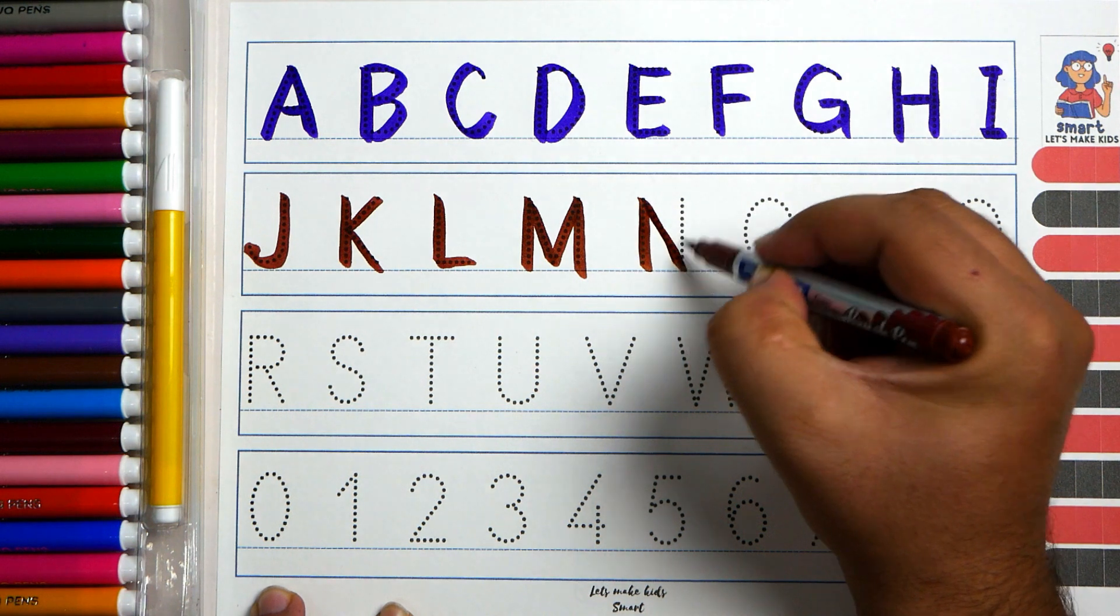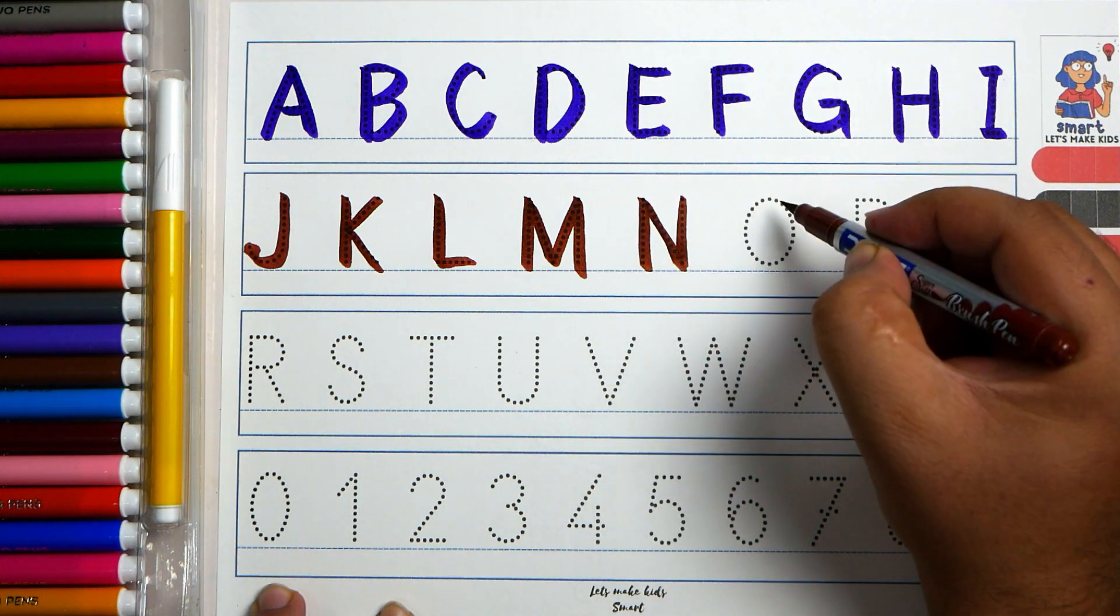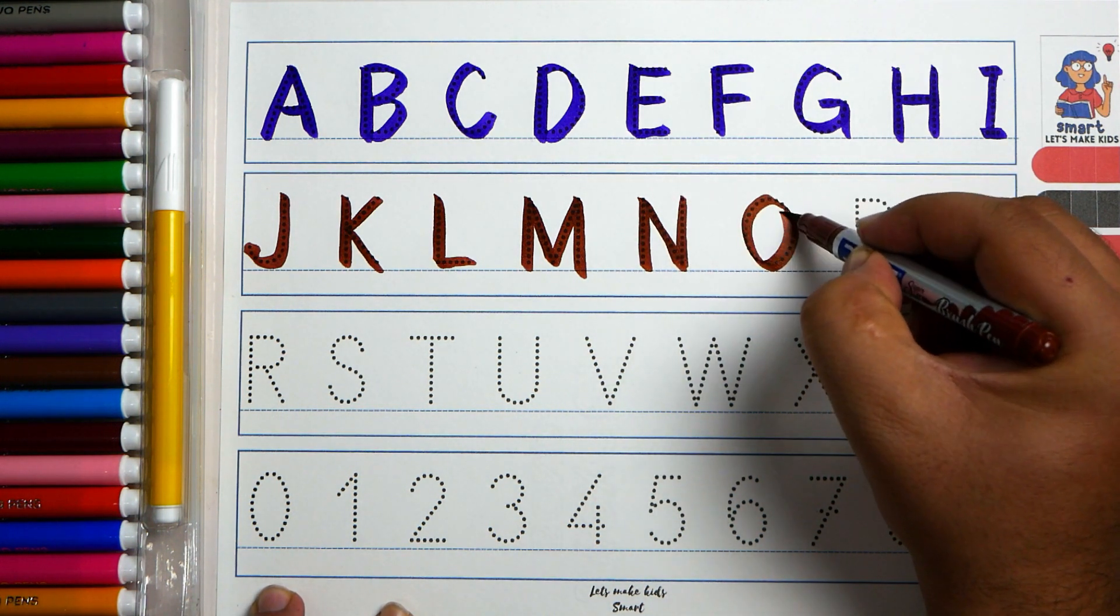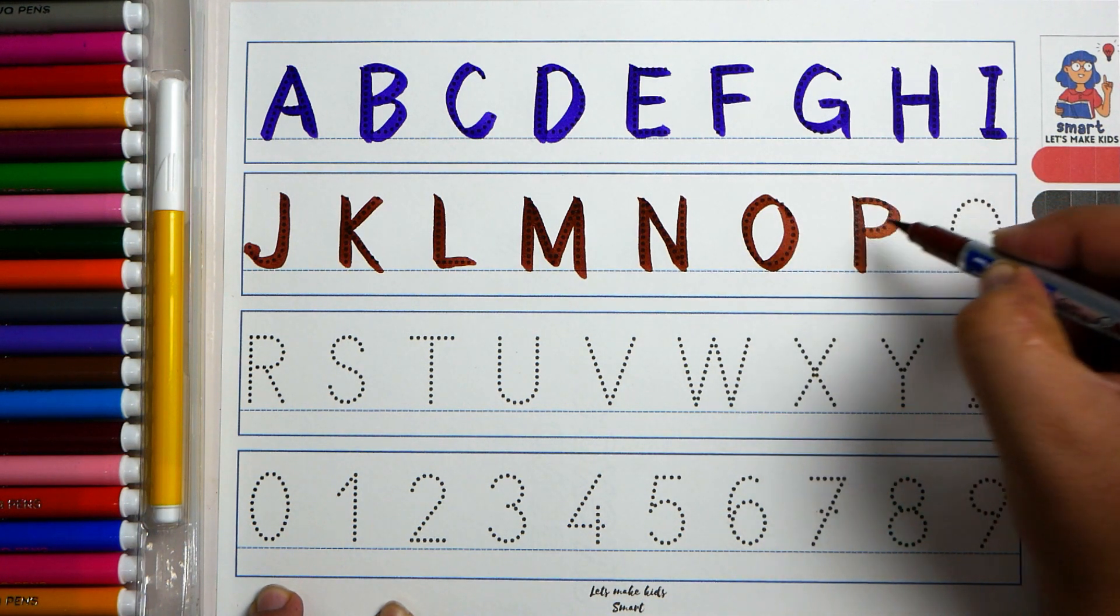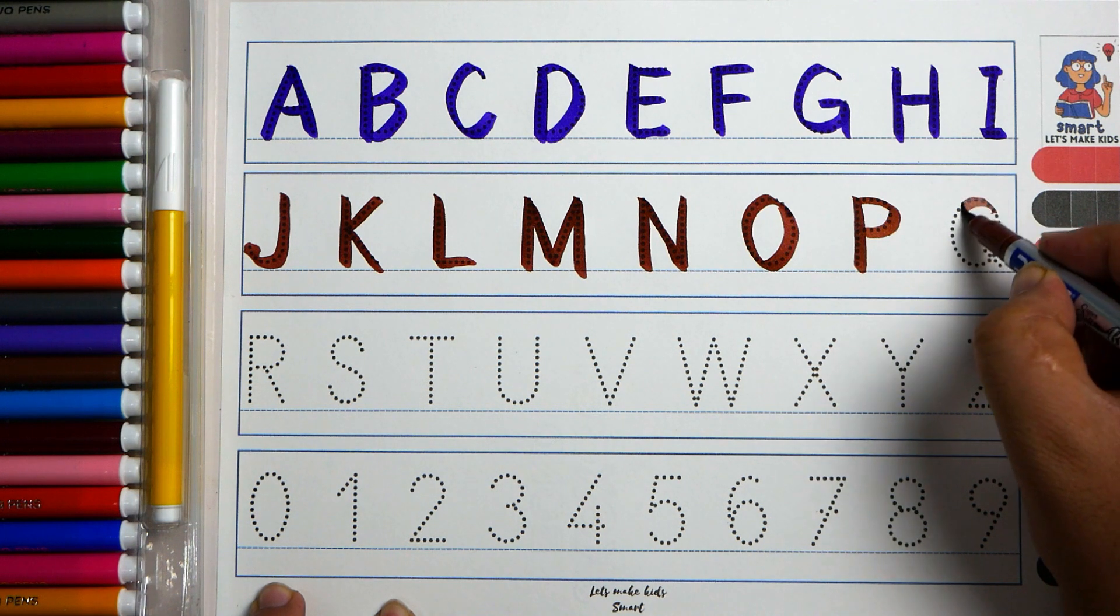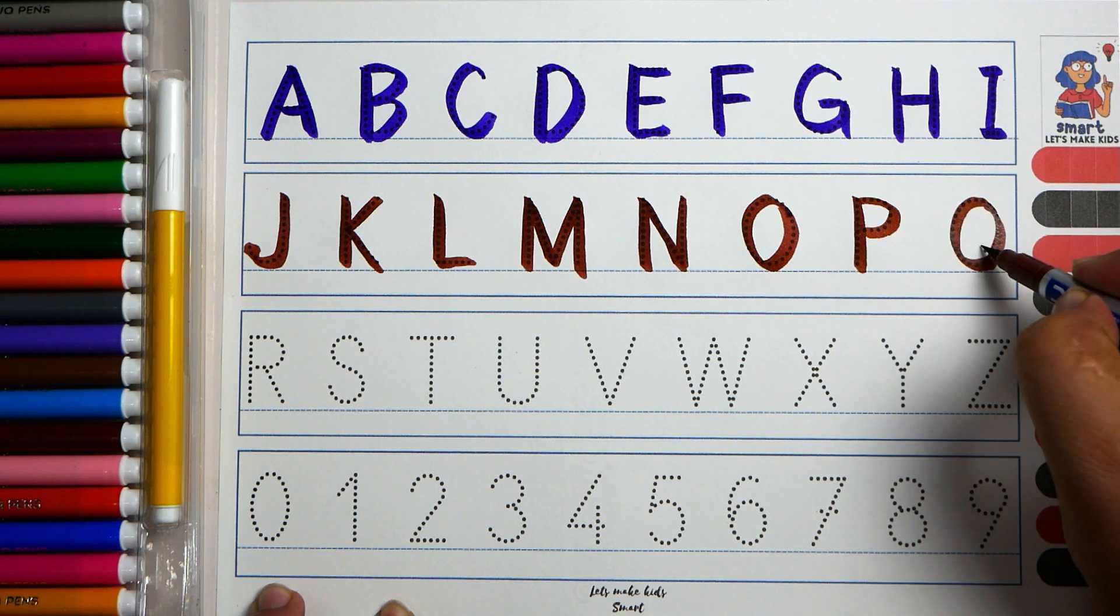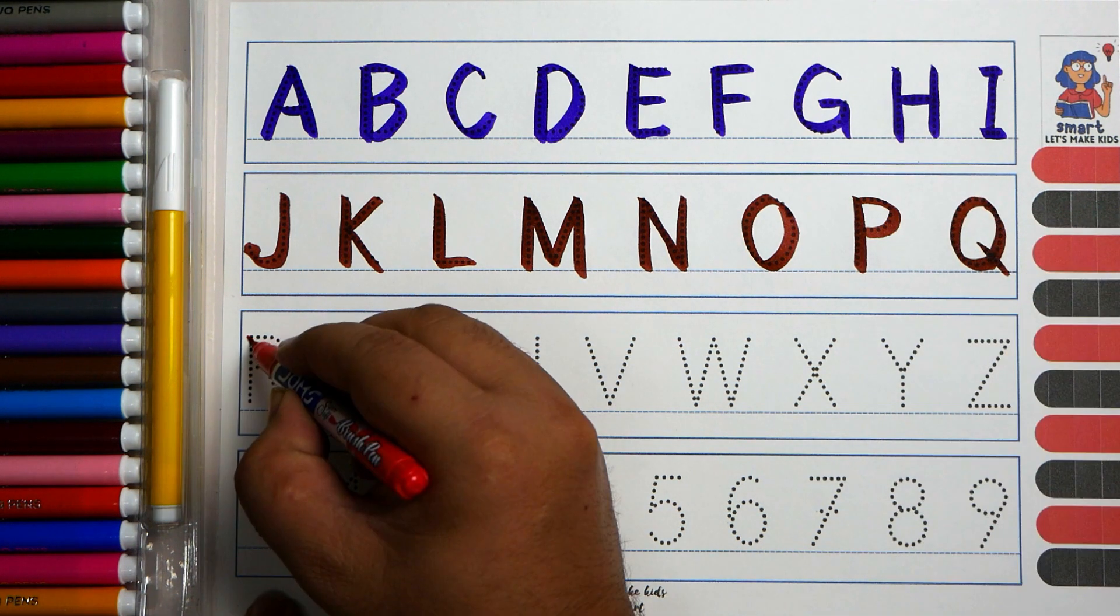N, N for nest. O, O for owl. P, P for peacock. Q, Q for queen.